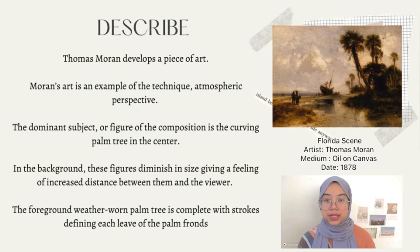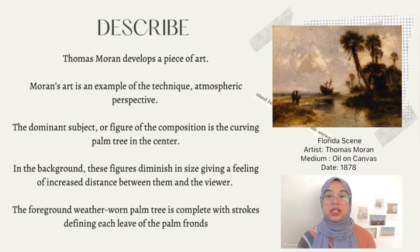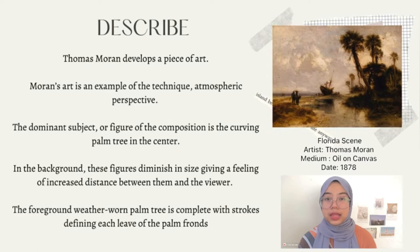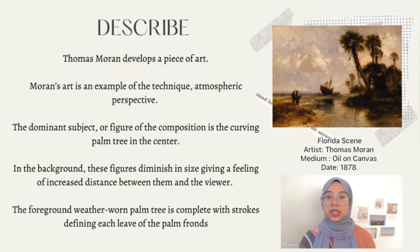Moran's piece is an example of the technique of atmospheric perspective. The dominant object or figure of the composition is a curving palm tree at the center, leaning from the side of a sandy hill towards the direction of the ocean. In the background, the ocean, a large ship, and passengers descending from the boat can be seen.